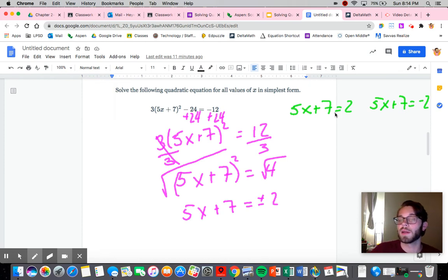If I write it this way, you'll see a little bit more clearly how to solve it. So we're going to subtract the 7 from both sides. And remember, these are two different equations, so we need to do everything essentially four times so that we're balancing both sides of each equation. 5x equals negative 5, 5x equals negative 9.